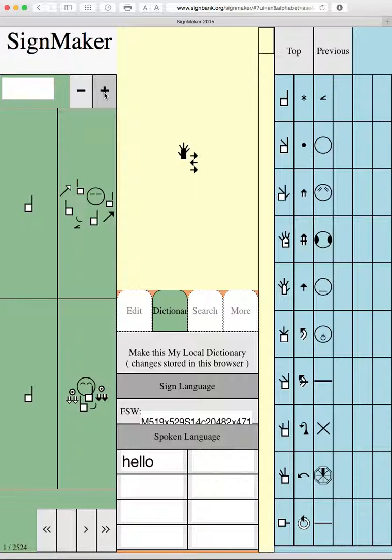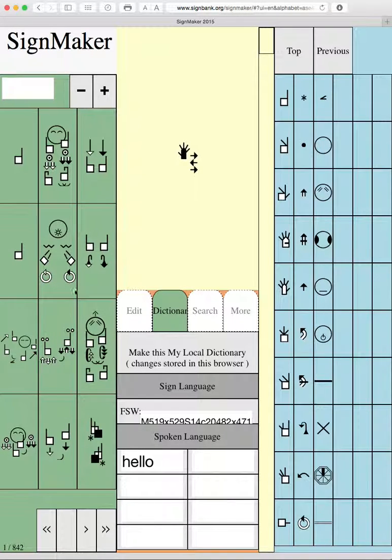Every time you do that down at the bottom of the dictionary area, see my mouse pointing here, there are now 2,524 pages. But if you go back up and click on the minus to make it smaller, now there are 842 pages because there are more to one page.